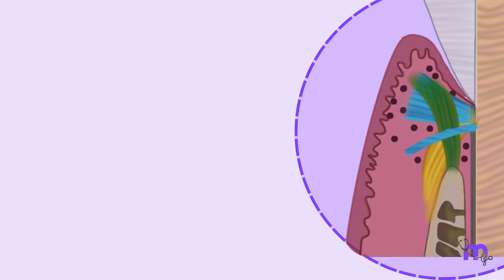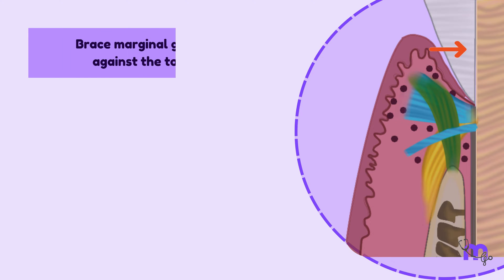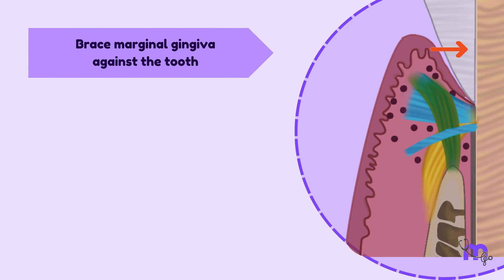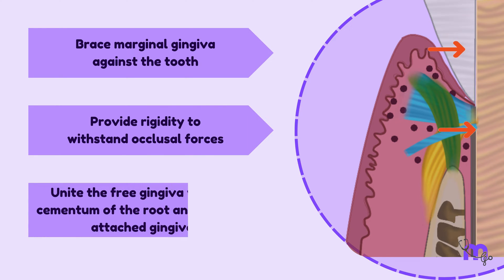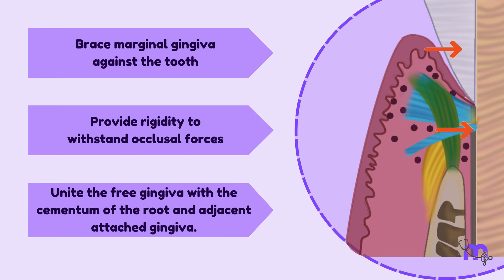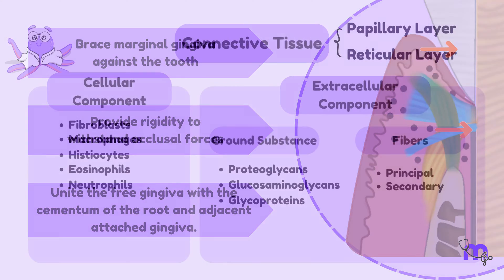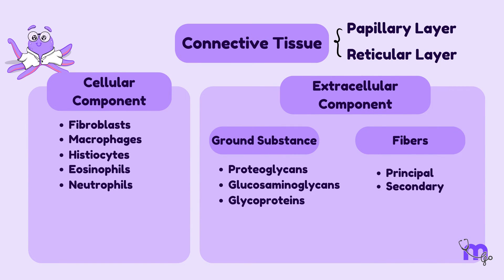To sum up, the gingival fibres are required to brace marginal gingiva against the tooth, help provide rigidity to withstand occlusal forces, and help in uniting the free gingiva with the cementum of the root and adjacent attached gingiva. Before we proceed, let us have a quick recap using a flow chart.